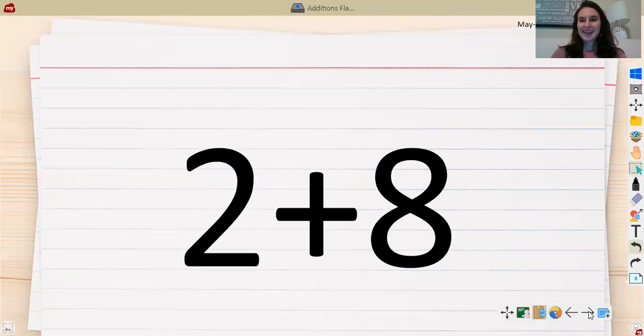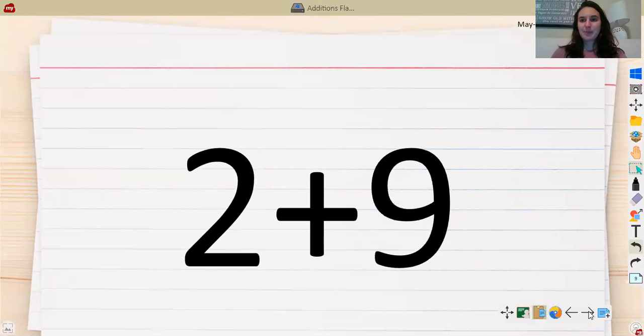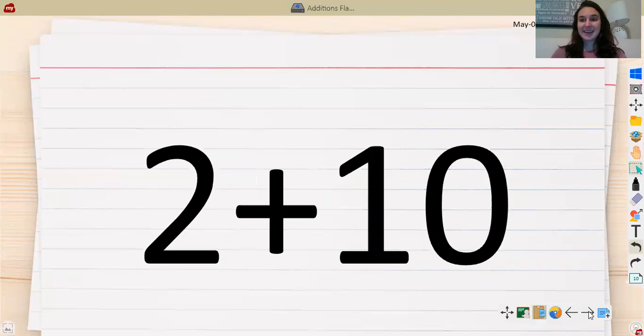Two plus eight equals. Two plus nine equals. And two plus ten equals.